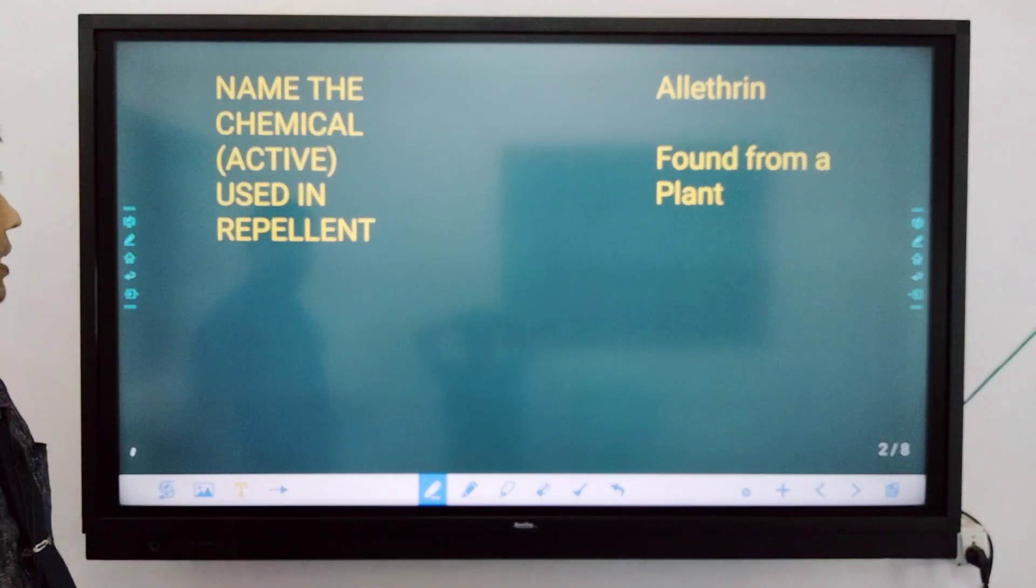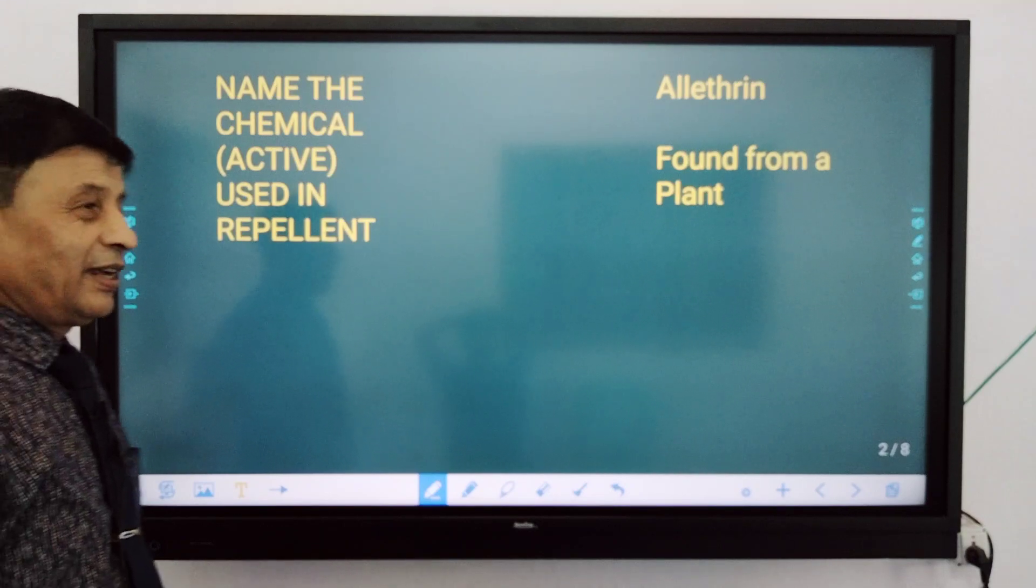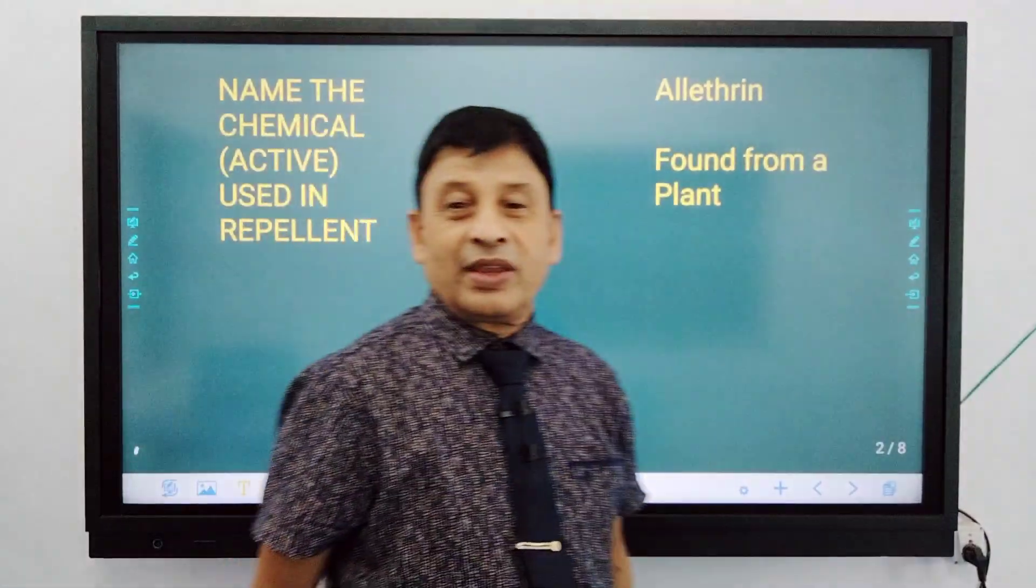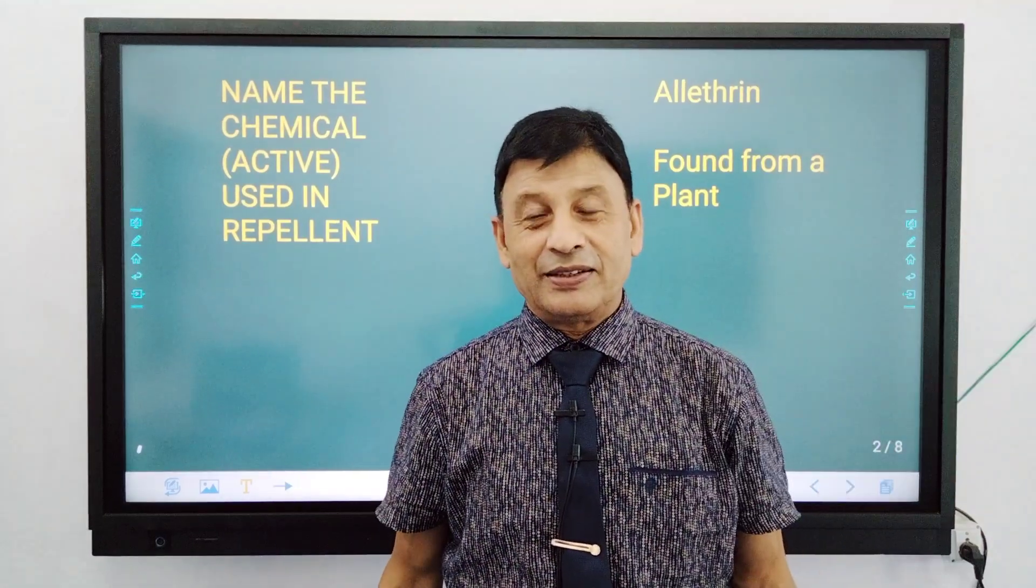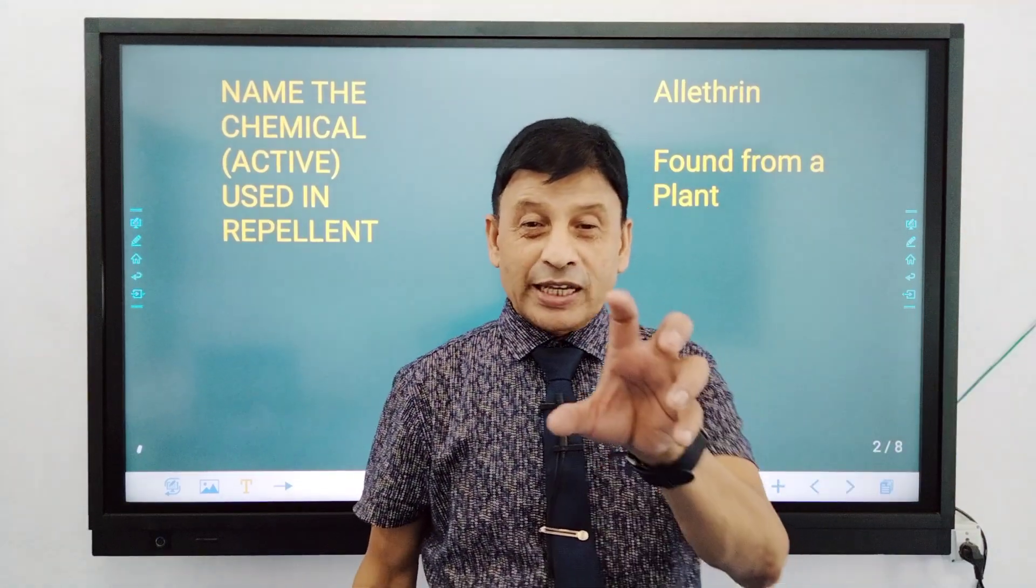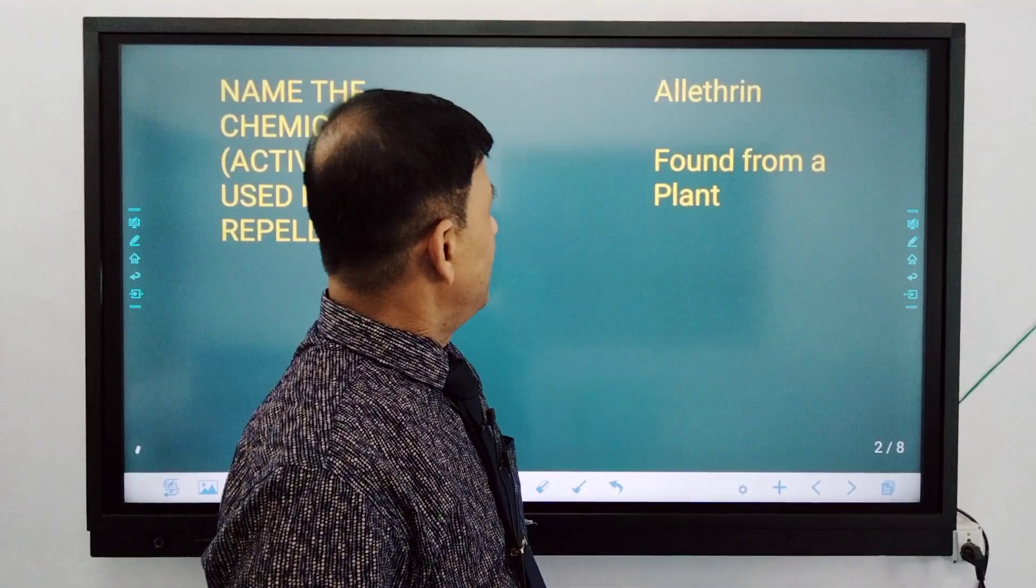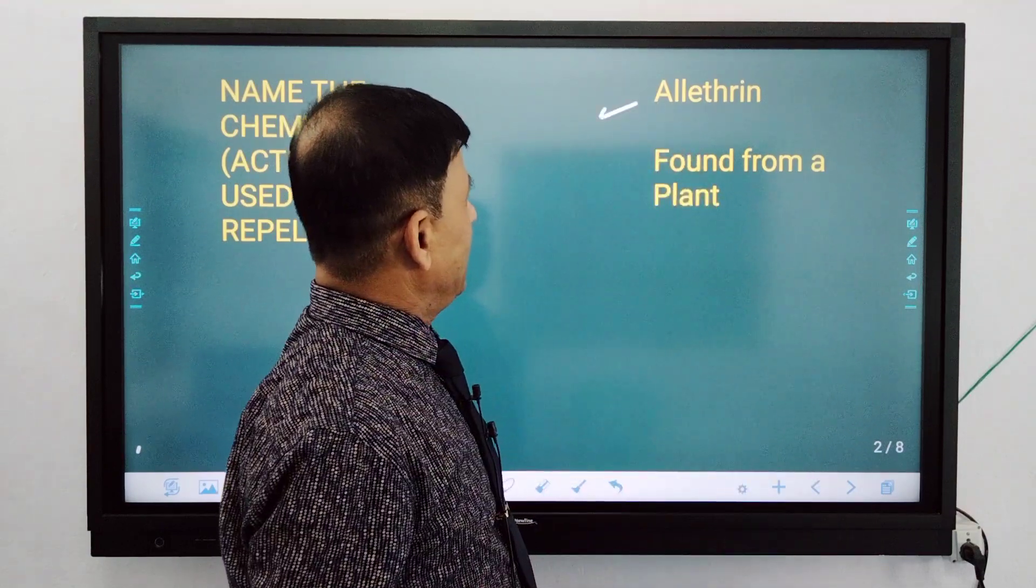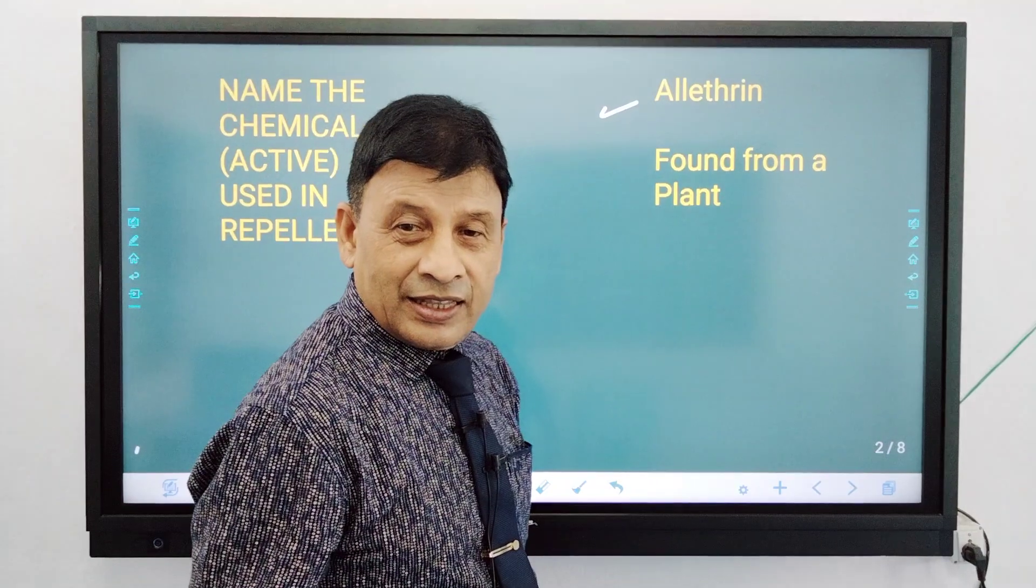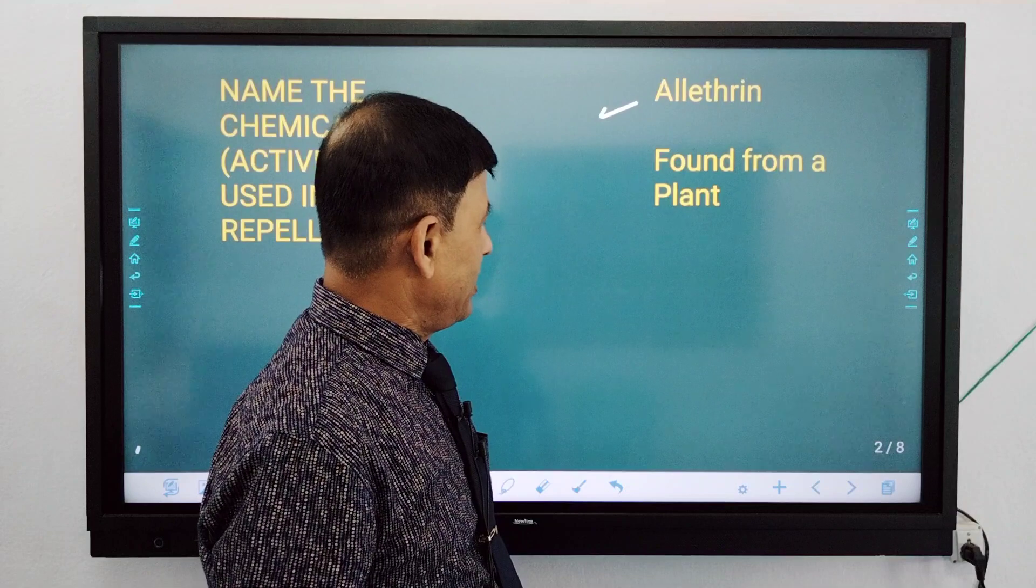What is the active chemical used in repellent? You can see that you can put it in the water. Which chemical is used? This chemical is found in the production of the plant.